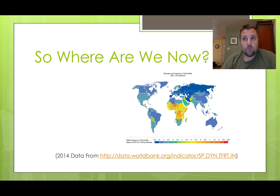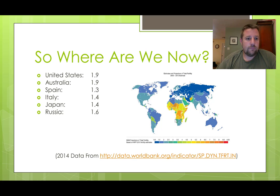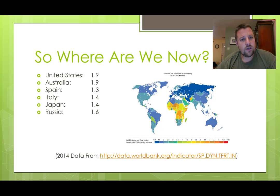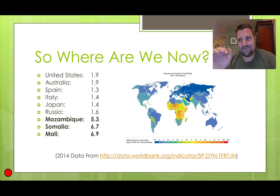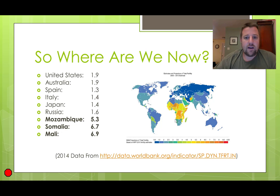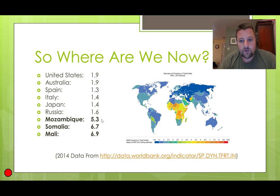Looking at where fertility rates are right now: six countries — the United States, Australia, Spain, Italy, Japan, and Russia — are all below two. Citizens of these countries are having fewer than two children per mother, which is below what is needed to maintain a stable population. On the other hand, looking at the map, in Africa you see a lot of oranges and yellows, almost into the reds. Mozambique, Somalia, and Mali have three of the highest fertility rates in the world.